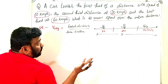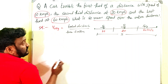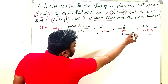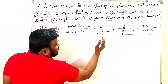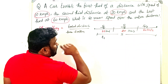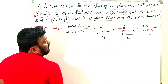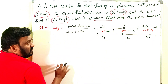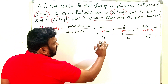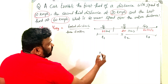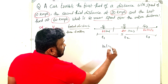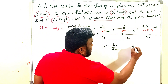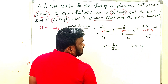Time is not directly given, so we need to find it. The car traverses the first third distance in time t1, the second third distance in time t2, and the third part in time t3. We know that velocity equals displacement divided by time, so v = s/t.